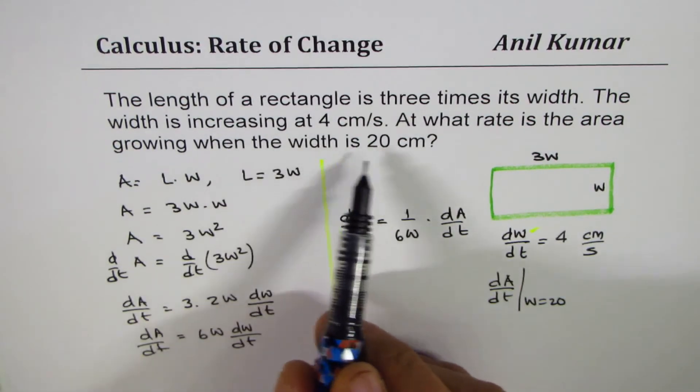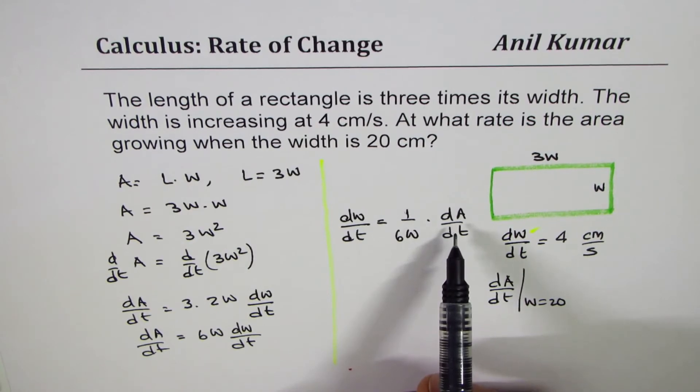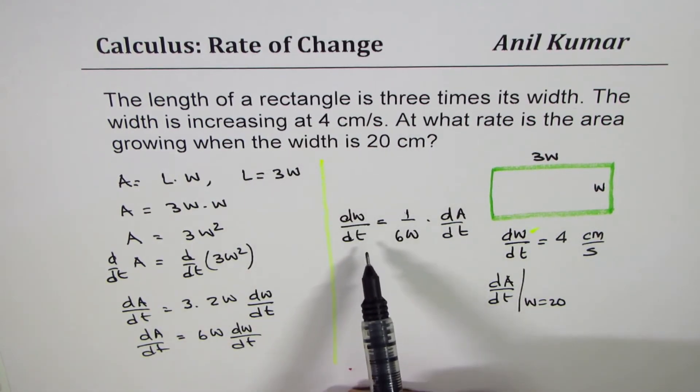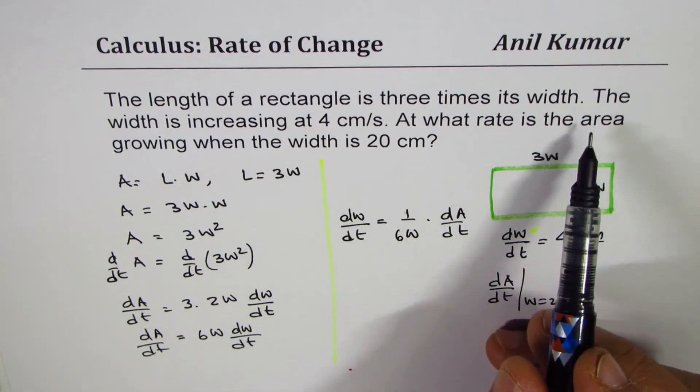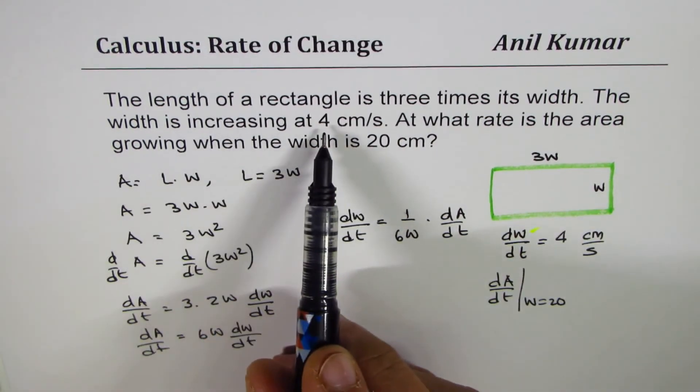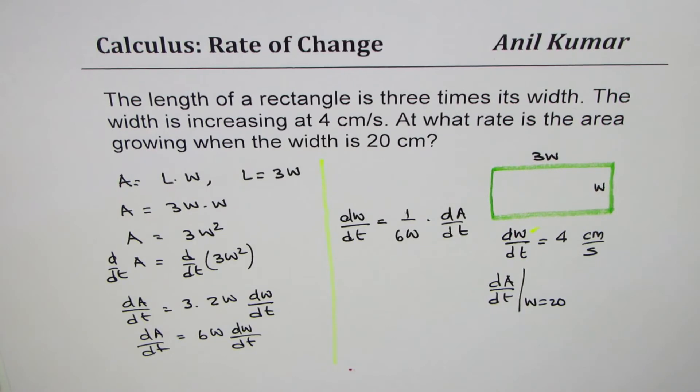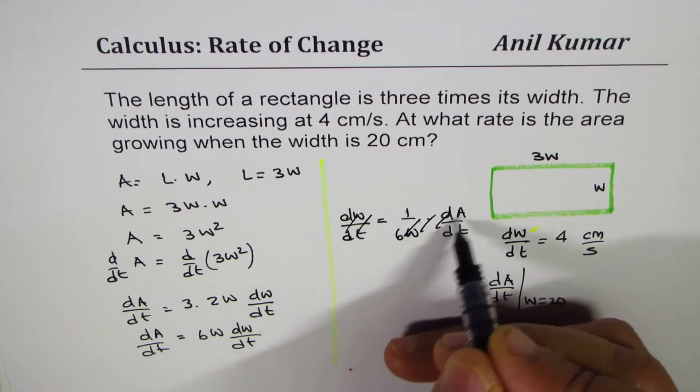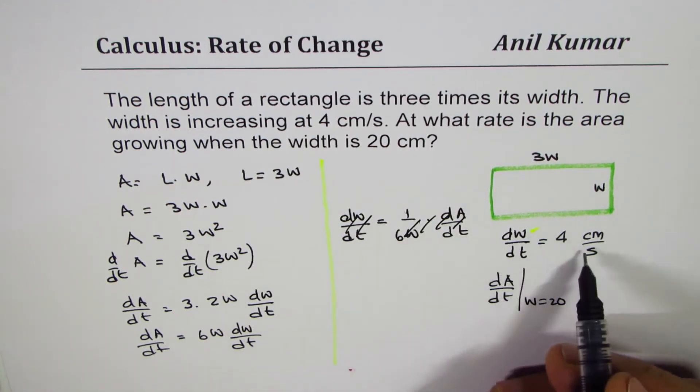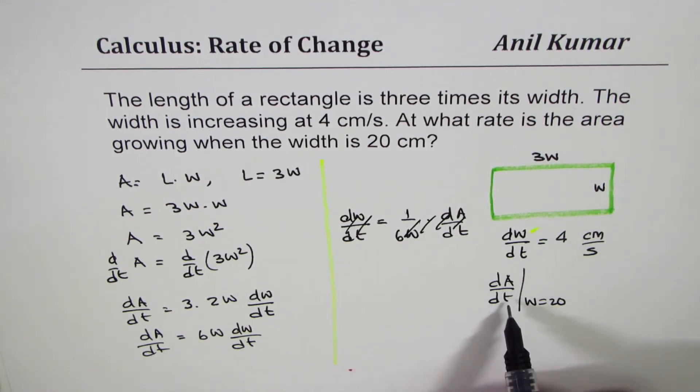Now when the width is 20, we need to find the change in width... wait, we're given that width is increasing at 4 centimeters per second. Oh, we actually wanted to find change in area! So no need to rearrange - sorry. We know dW/dt and we have to find dA/dt.